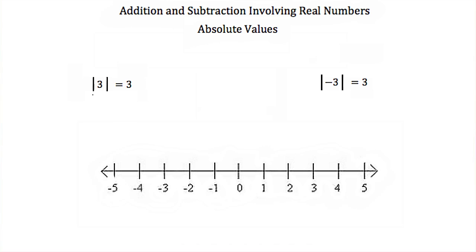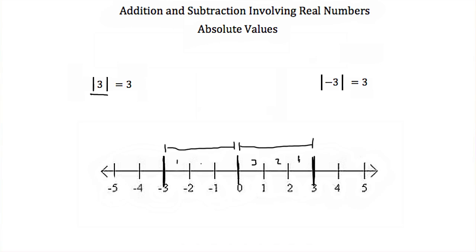So if we're given the absolute value of 3, we would go to 3 on our number line and count how far away we are from 0 — that's a distance of 1, 2, 3. The absolute value of negative 3: we go to negative 3 on our number line and find our distance from 0, which is again 1, 2, 3.